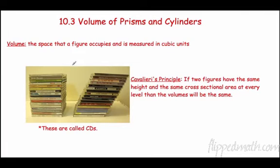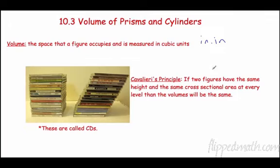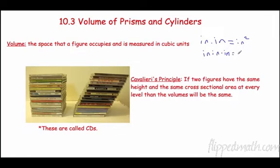Let's look at volume of prisms and cylinders. Volume is the space that a figure occupies and is measured in cubic units. When we find area, we're finding what we can wrap around the outside — that's two units multiplied, so it's squared. Now we're finding what fills a figure up, like how much milk fits in a milk carton. That's three units multiplied together, which is why it's in cubic units.